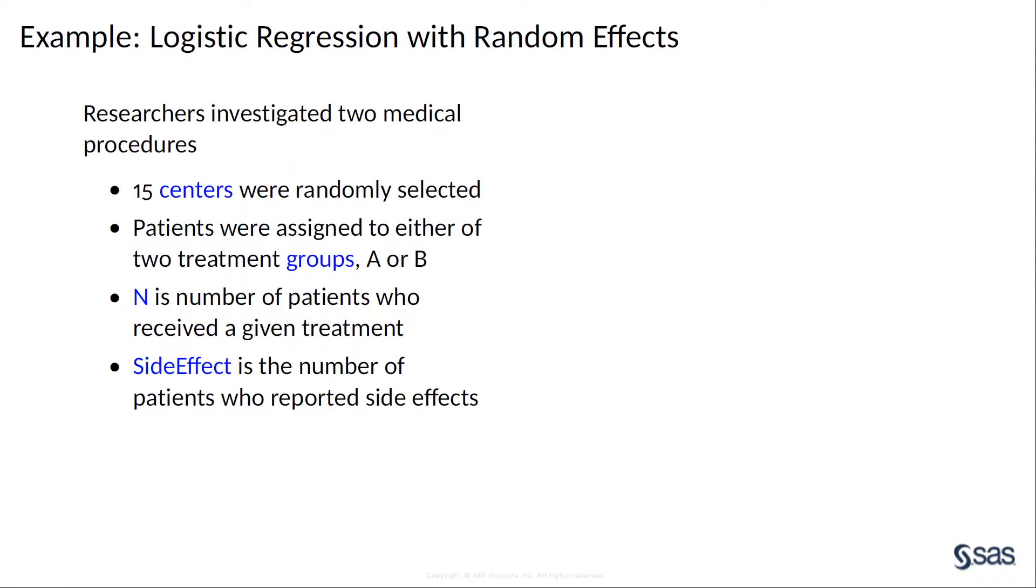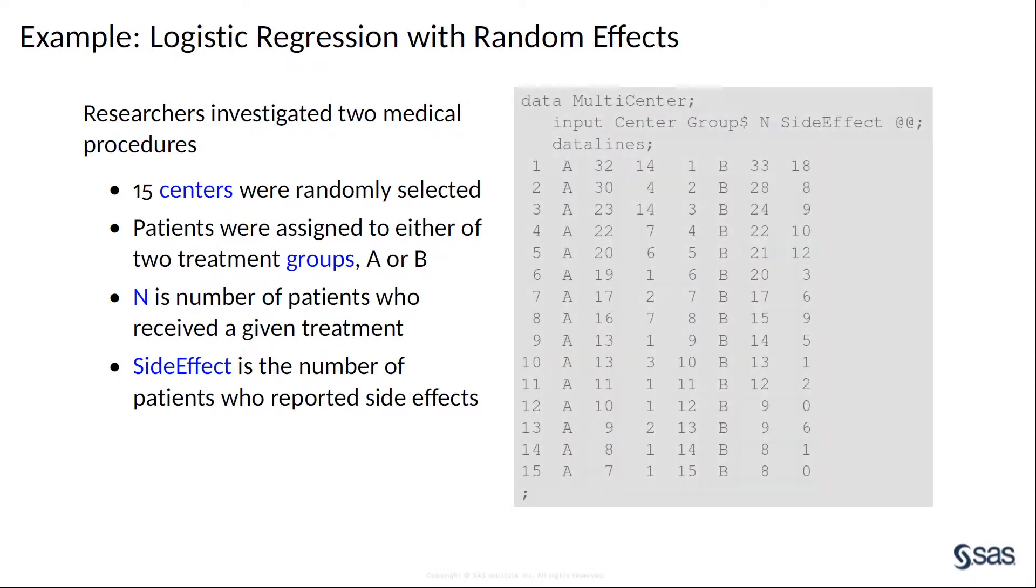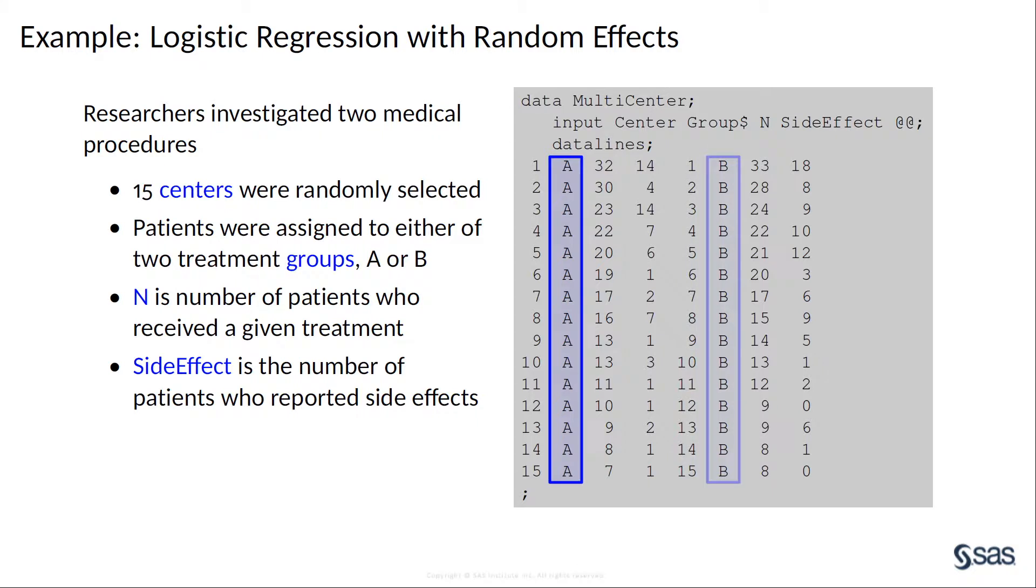Now, let's use an example to show you how to use this procedure. In this study, researchers compared two medical treatments to see which treatment was less likely to cause side effects. 15 centers were selected at random. At each center, patients were assigned to either treatment group A or treatment group B.